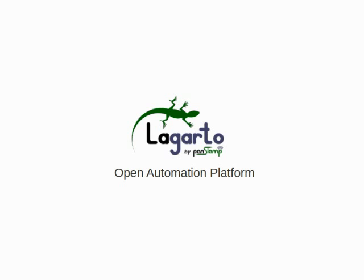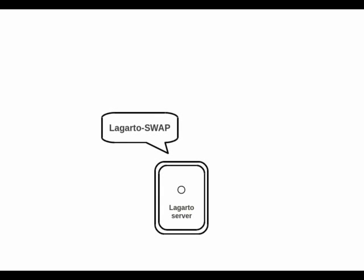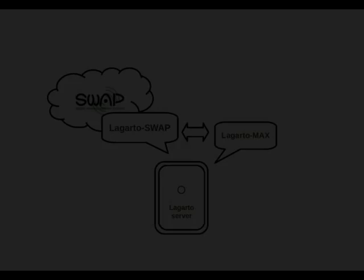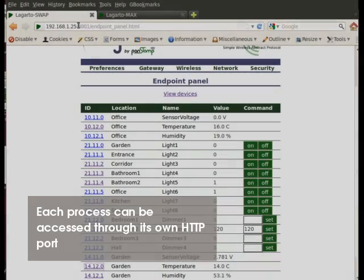Legarto is an open automation platform following a client-server architecture. For this introduction, we use a common computer for Legarto Swap and Legarto Max. Both processes form our Legarto network. Legarto Swap is connected to a wireless network of pan stamps, whilst Legarto Max takes care of events coming from Legarto Swap. Each process can be monitored and configured from its own web page.